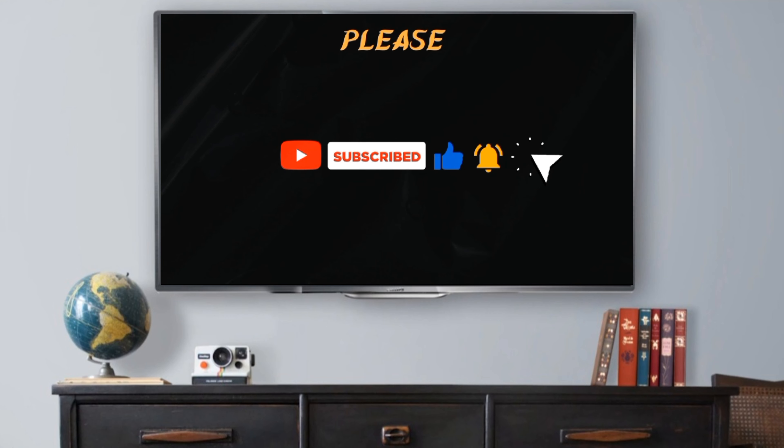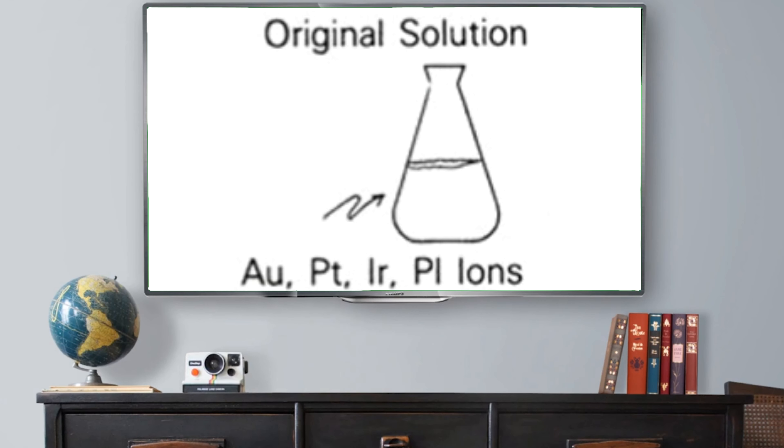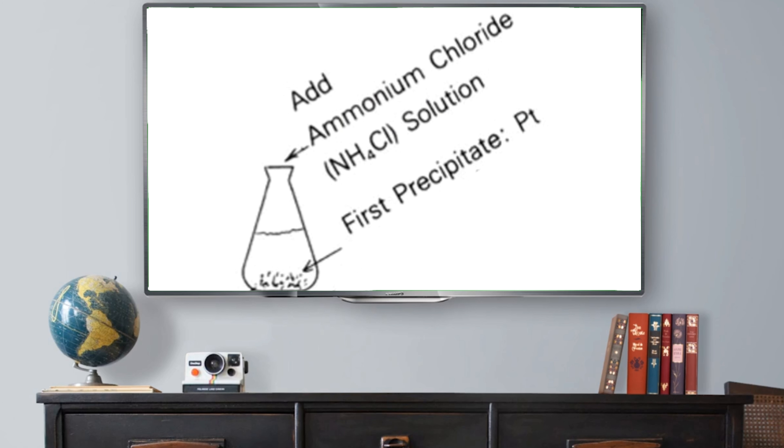The process involves stripping values from aqua regia solution, boiling it down to remove nitric acid, diluting it with water, precipitating platinum using ammonium chloride, and separating it from iridium.